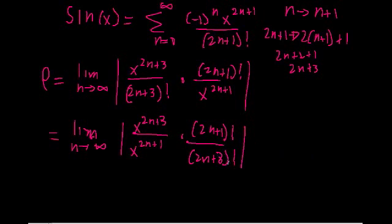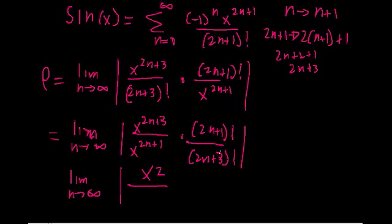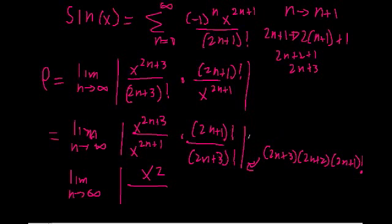Let's simplify this. We can say that x to the 2n+3 is just x to the 2n+1 times x squared, so dividing those terms leaves us with x squared. Then (2n+3) factorial is just (2n+3) times (2n+2) times (2n+1) and all remaining terms, which is (2n+1) factorial. Dividing those out, we're left with x squared over (2n+3)(2n+2) in the denominator.